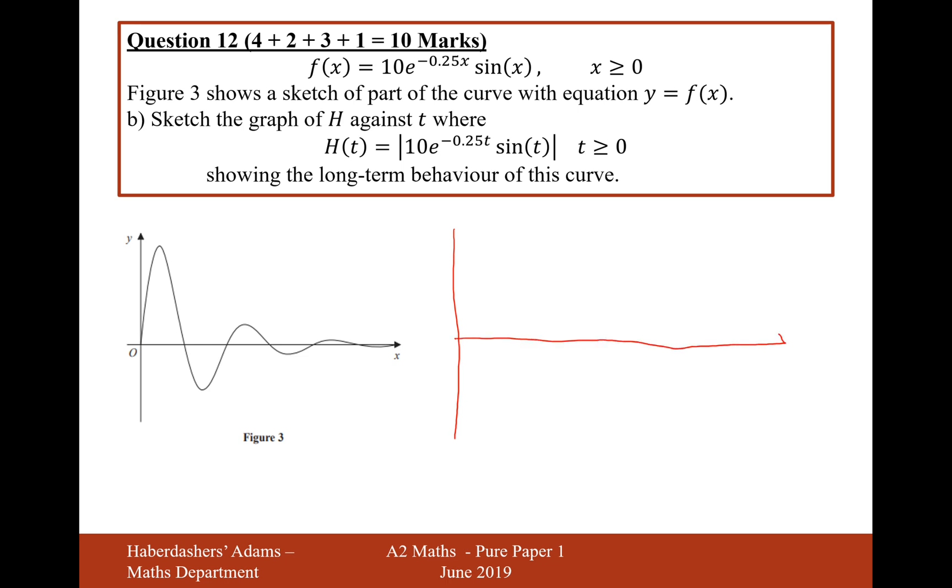If we've got a graph that's h against t, and it's a modulus graph, then a modulus graph just means that everything from the bottom is going to be reflected up to the top. Because when you've got a modulus around something, it makes it positive, so it's going to go bounce, and bounce.